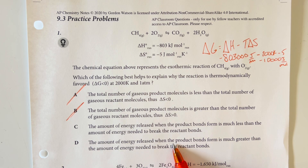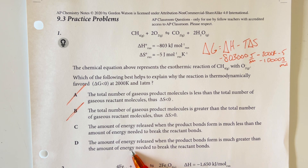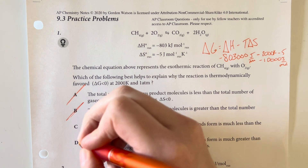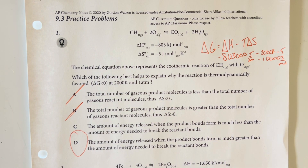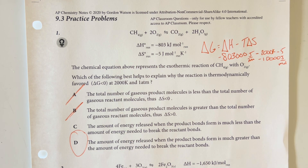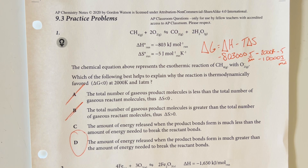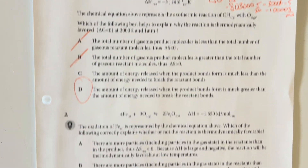Choice C says the amount of energy released when the product bonds form is much less than the energy needed to break the reactant bonds — that is the opposite of the truth. The correct answer is option D: the amount of energy released when the product bonds form is much greater than the energy needed to break the reactant bonds, describing a favorable outcome.